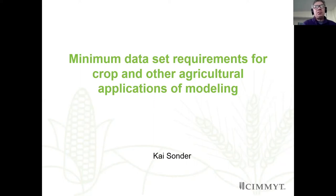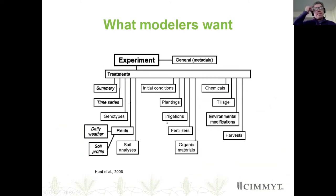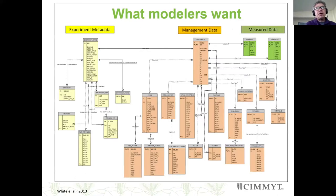Minimum datasets is unfortunately the reality. Models and modelers always want a lot of data — lots of data from the crops, from the soil, from the environment. We would like a lot of detail: well explained, well expressed, and reliable data.